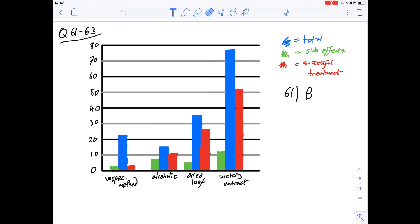If we look at 62 it says for the watery extract suppose that side effects only occurred for patients who were treated successfully. How many patients had neither successful treatment nor a side effect?